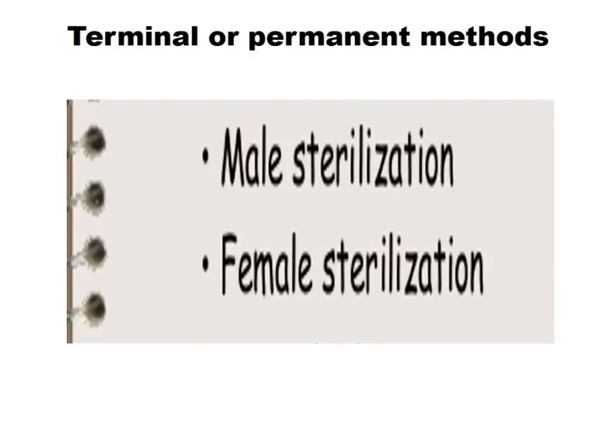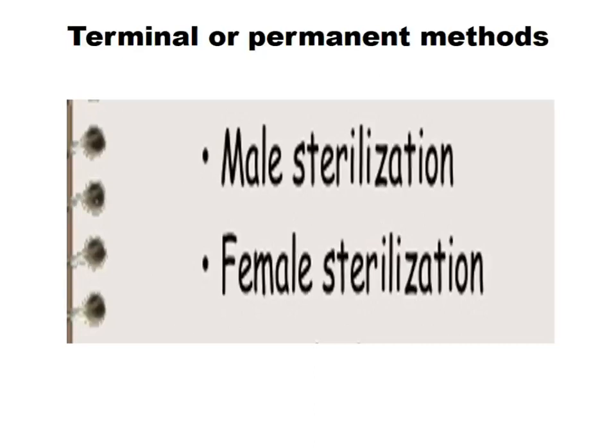Terminal or permanent methods are either male sterilization or female sterilization — both are surgical options. Coming to natural contraceptive methods: these are either calendar-based or symptom-based methods. Either we know the day of ovulation — 14 days before the next menstrual cycle — or we rely on symptom-based signs such as cervical secretion or basal body temperature.